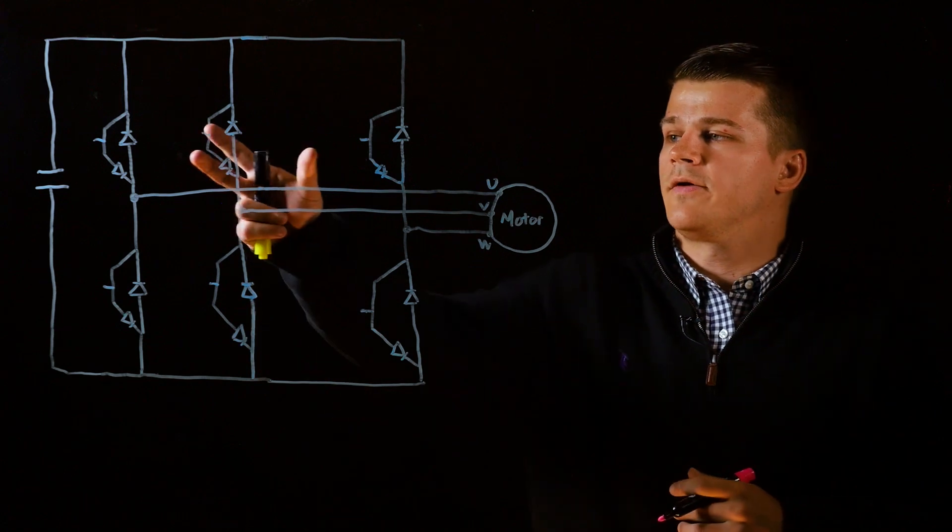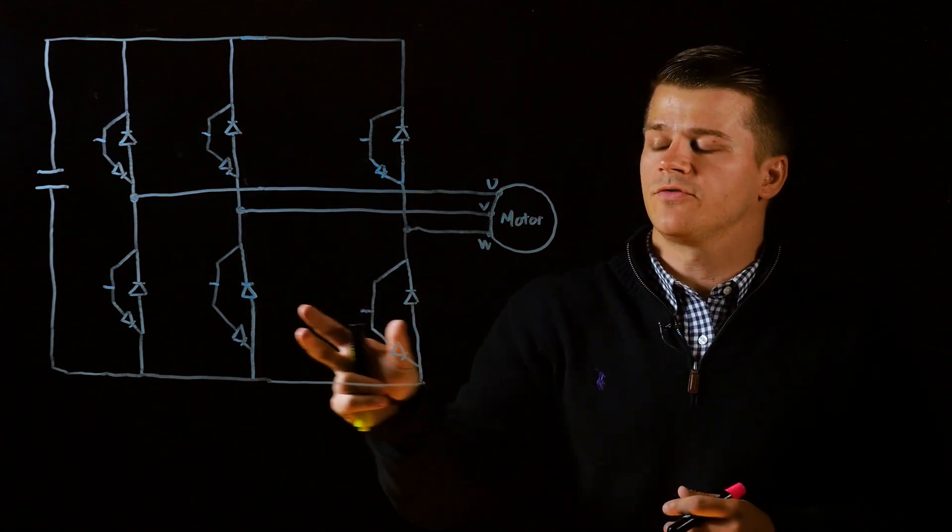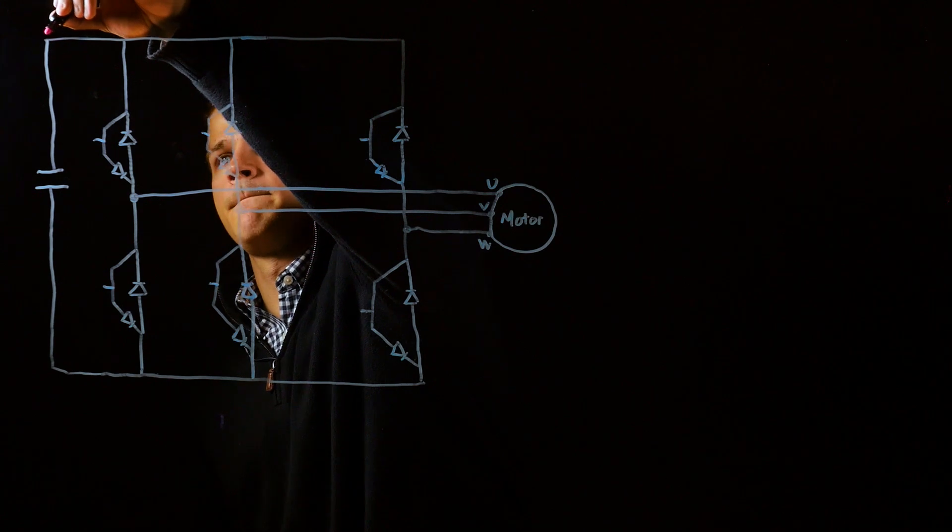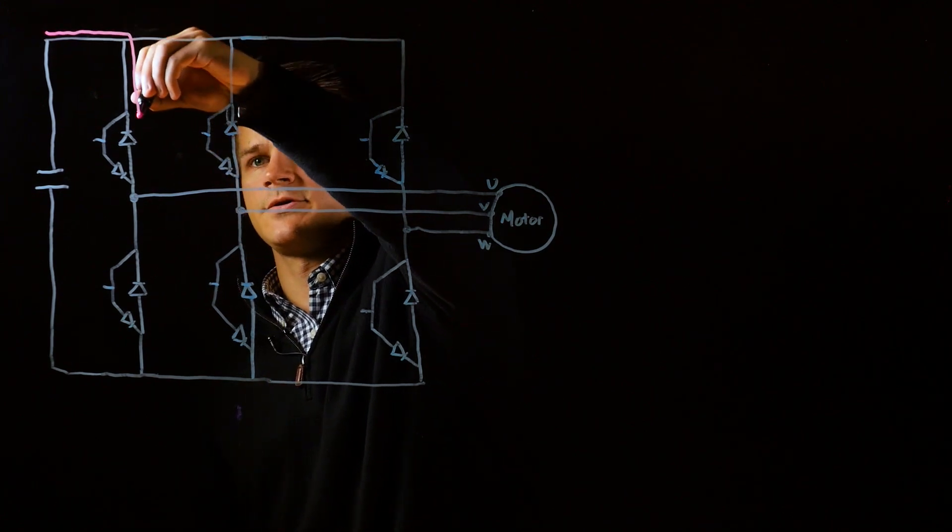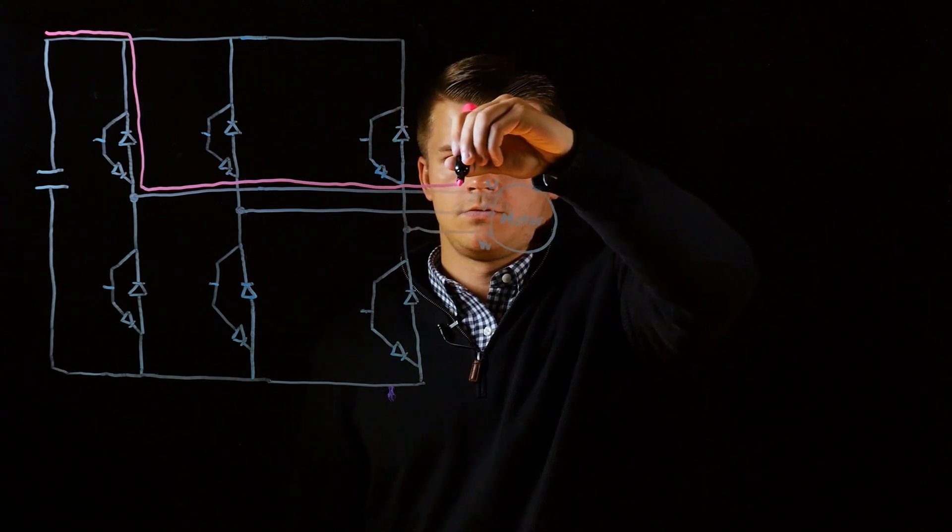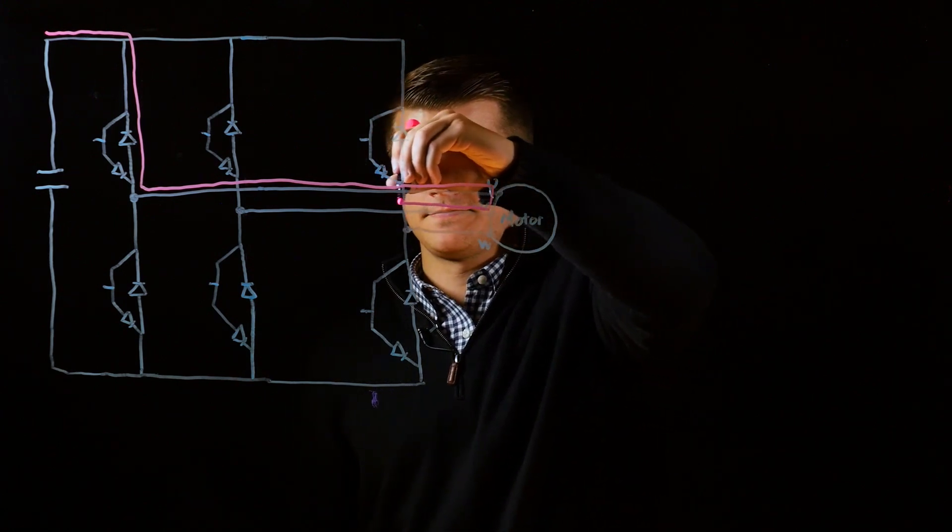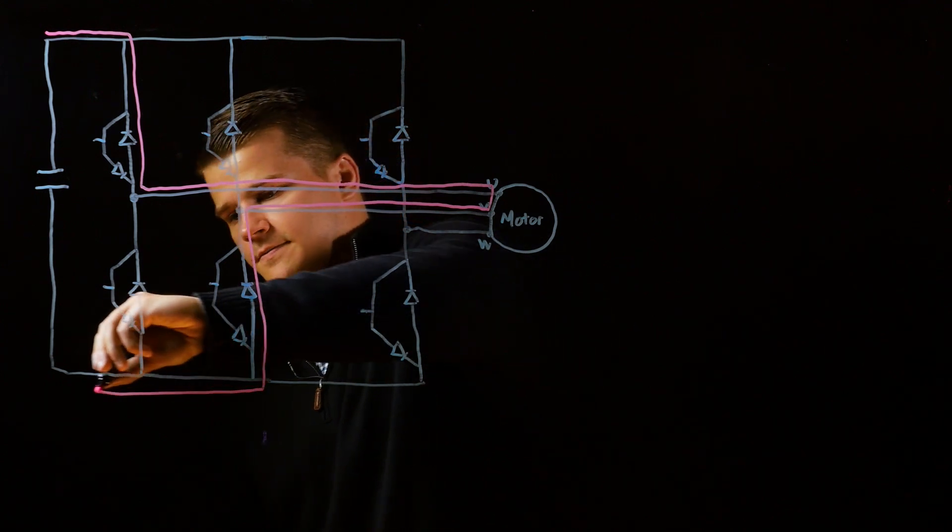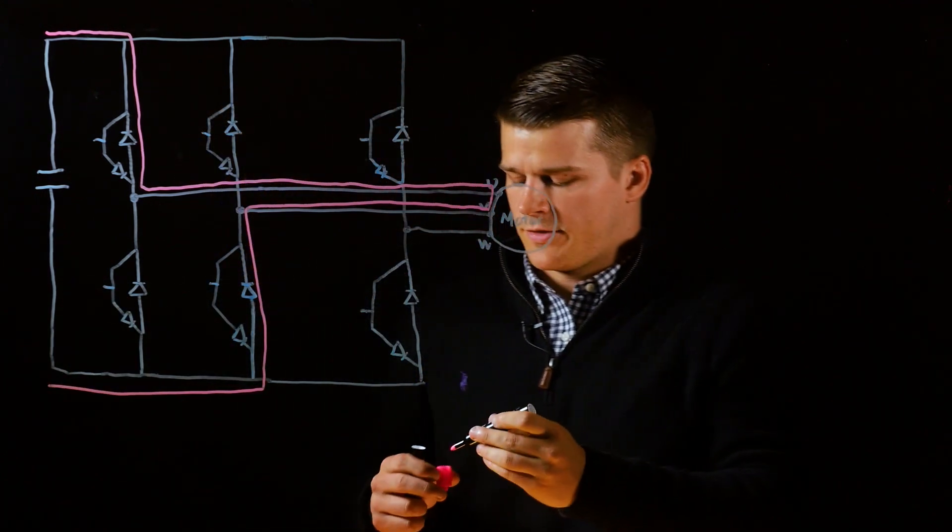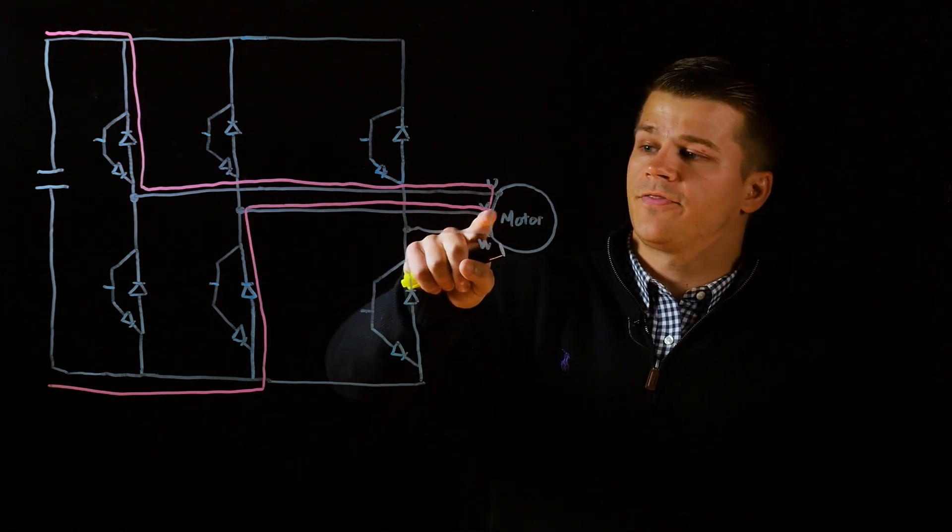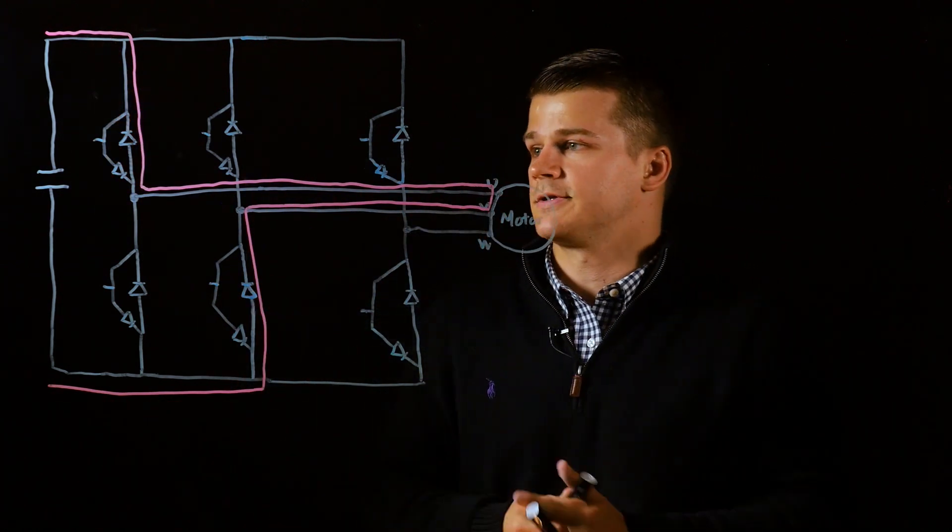So in order for current to flow, one of these transistors from the top and one from the bottom need to be open. For example, if we start over here and run through this transistor, we can go through the U phase, down through the V phase, and back out here. So with these two transistors open, we go through the U phase and then through the V phase and then back out to the DC bus.